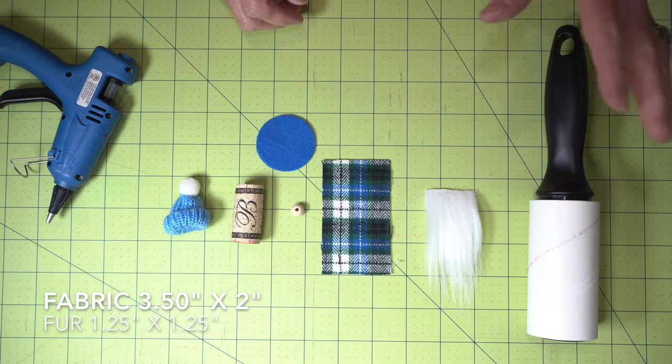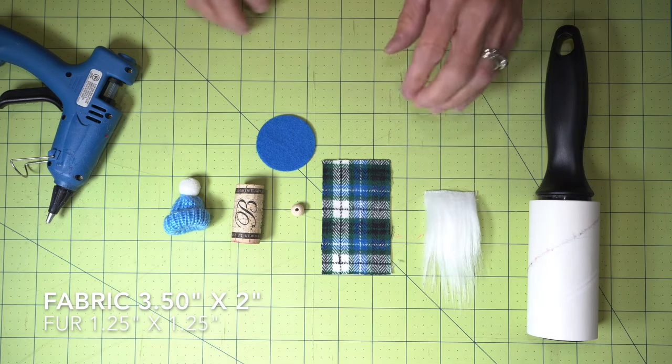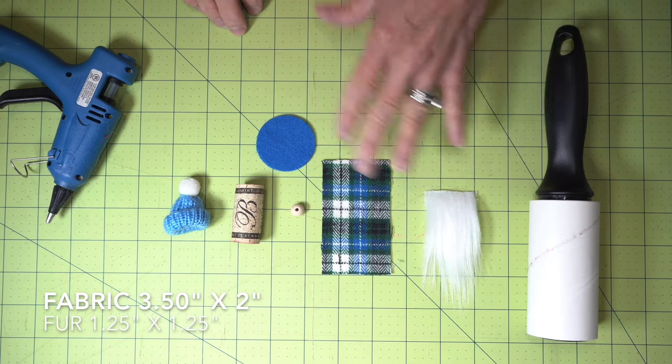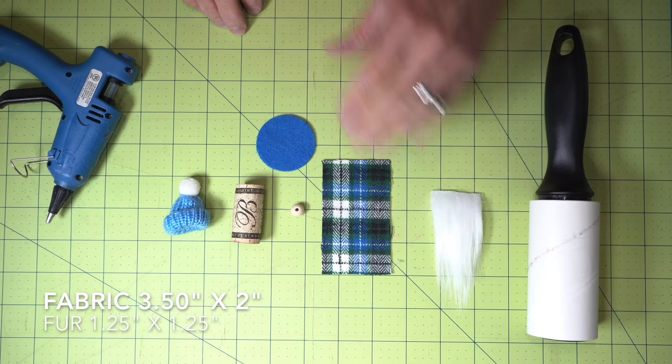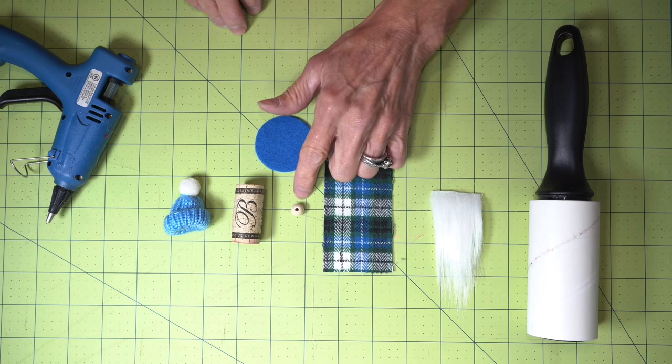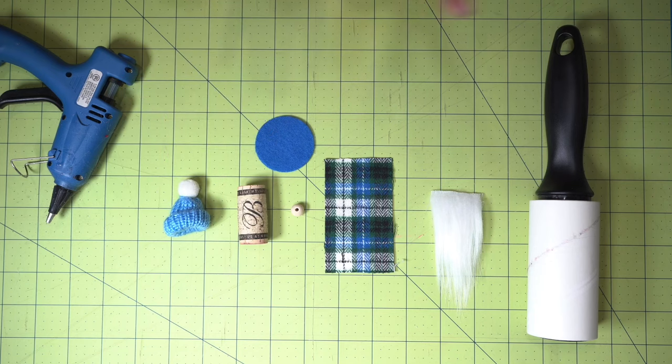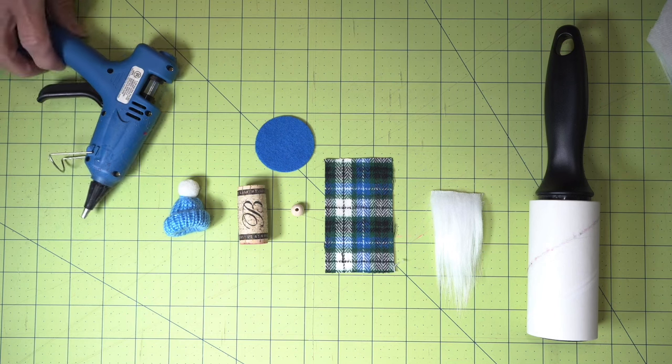So what you're going to need, you're going to need a lint brush, you're going to need a beard made of faux fur, and I'll show you how to cut that out here in a minute so that you understand how to cut faux fur. You're going to need a piece of fabric, a piece of felt for the bottom, a round bead for the nose, a cork, and a little hat. And I'll put a description in the comment section at the bottom so that I can show you where I got all these products. Oh, and you're going to need a hot glue gun.